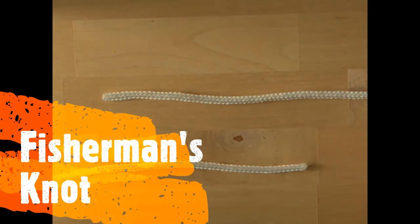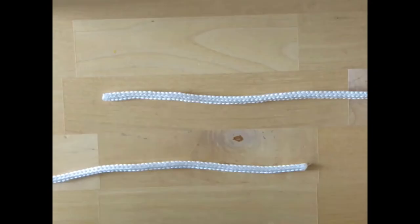The fisherman's knot is used to tie two ropes together end to end, but you can use two ends of the same rope like I have.